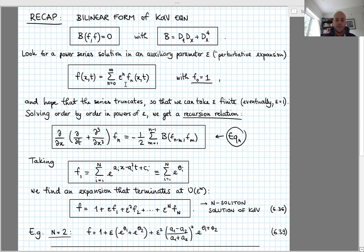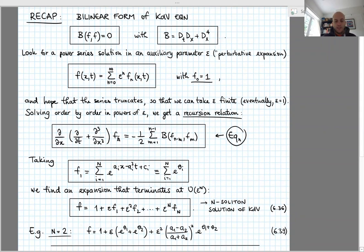The advantage of looking for a power series solution is that we could solve the equation order by order in powers of epsilon, giving us a recursion relation called equation n: if we know all the f up to order n minus one — f1, f2, f3, up to f_{n-1} — then we can solve this equation to determine f_n, the coefficient of the next order. A simple solution of the first equation is that f1 is a sum of exponentials of linear functions of x and t, where the coefficients are related so we write exponentials of theta_i.